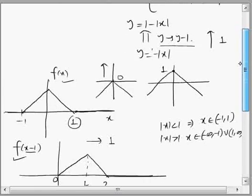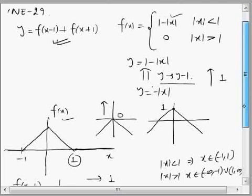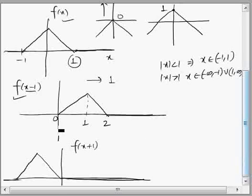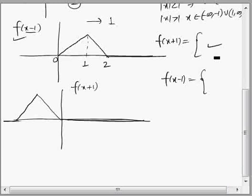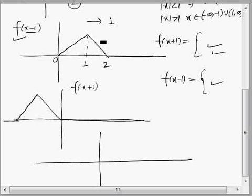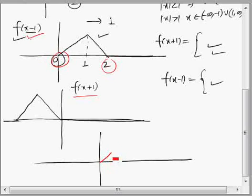Now we need to add these two graphs: f(x-1) + f(x+1). Generally, adding two functions graphically is not possible, so we write the piecewise definitions and add them. But in this particular question, graphical addition is possible. Between 0 and 2, f(x-1) takes its triangular shape while f(x+1) is 0, so only f(x-1) contributes. They are mutually exclusive: when one has non-zero values, the other is zero.